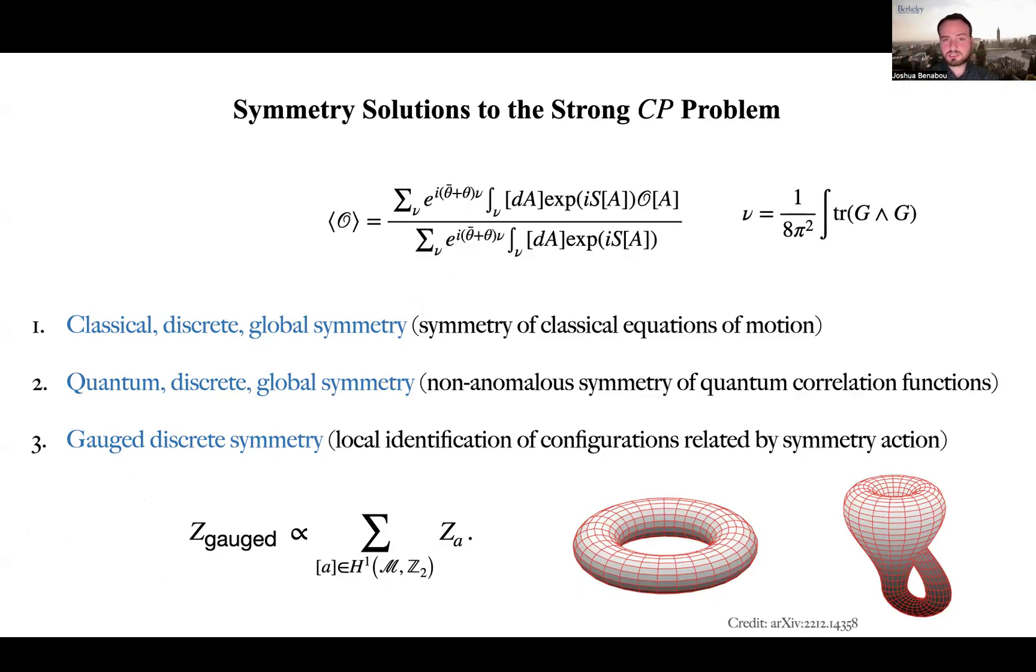and we could also consider the parameter theta appearing in the equation shown here, which is a free and otherwise undetermined parameter labeling the superselection sector of the theory. This parameter theta is commonly associated with the so-called theta vacua of the theory, but it may also be interpreted as the choice of a boundary condition for QCD.